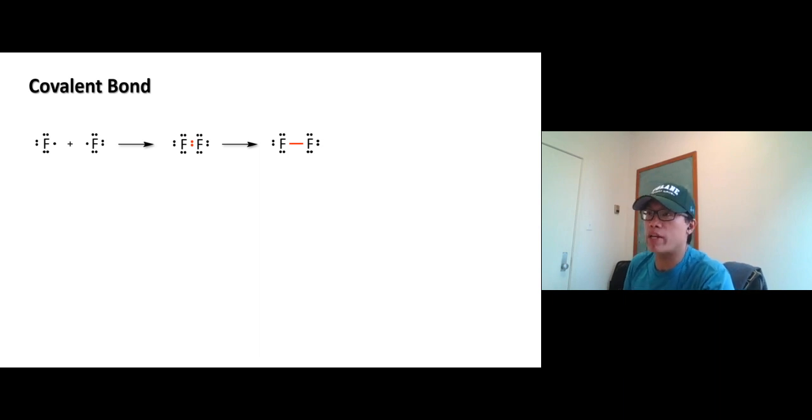Moving on to a covalent bond and covalent compound. While ionic bond is the bond between metal and non-metal, covalent bond is the bond between two non-metals. And covalent call mean share, share valence electrons.